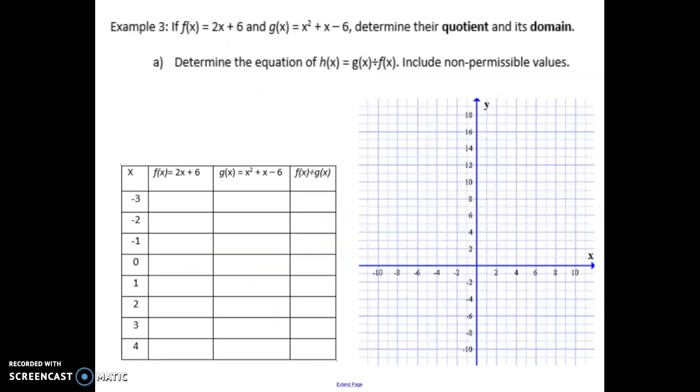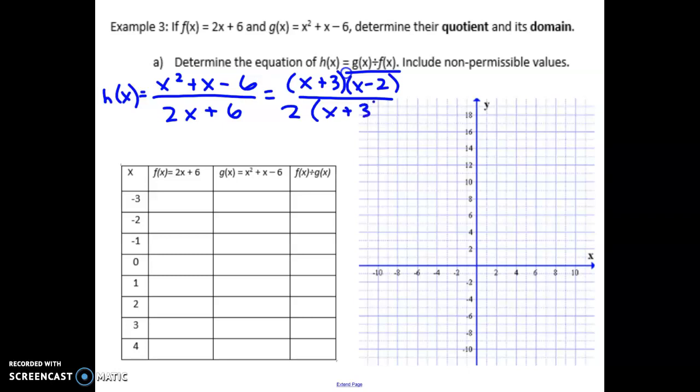So here we're going to start by dividing—sorry, it's actually g divided by f. So the g function here is going to go on top, and the f function is going to go on the bottom. So we have h of x equals x squared plus x minus 6 over 2x plus 6. But we can sometimes simplify these. Remember, when you simplify a fraction, you have to divide out a common factor. So if I factor the top, we get x plus 3 and x minus 2. And if I factor the bottom, I see there's a GCF of 2. So if I divide out the 2, I'm left with x plus 3. So looking at this, is there a common factor on the top and the bottom that can be divided out? It's x plus 3, right. So that means I'm left with x minus 2 over 2. So my new equation is x minus 2 over 2 for h of x.